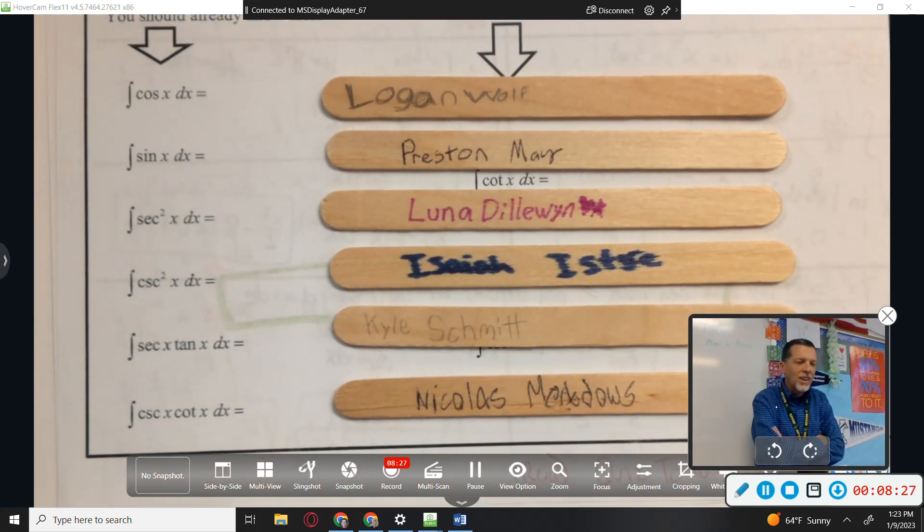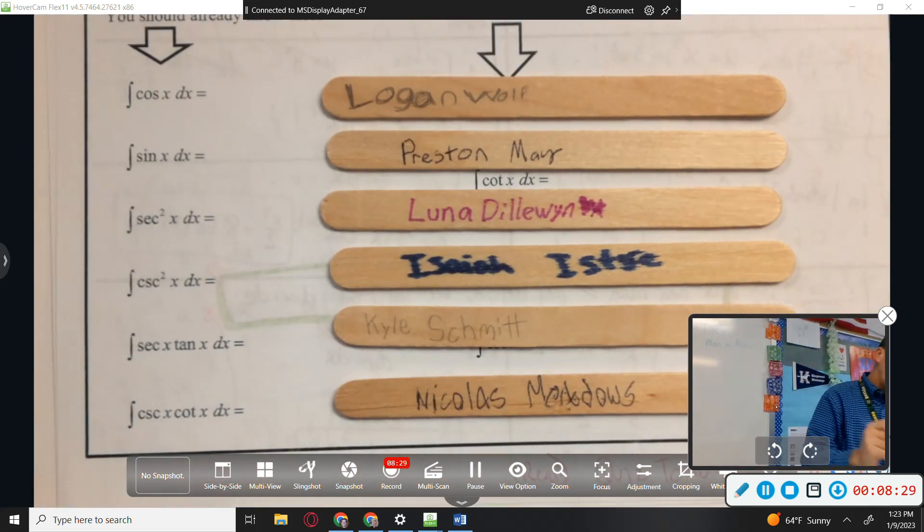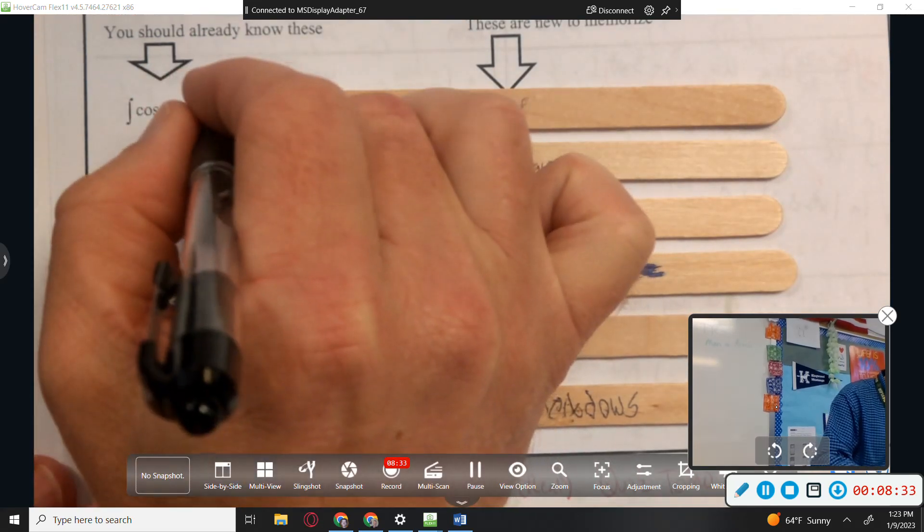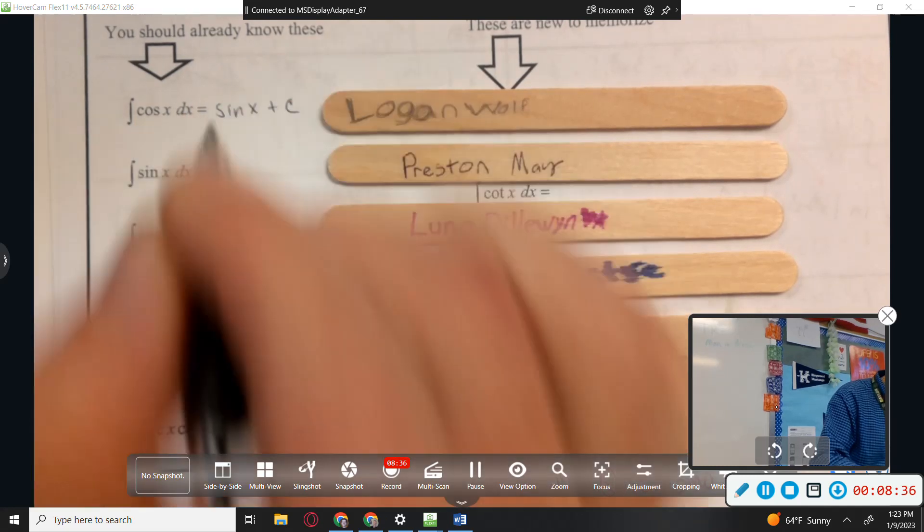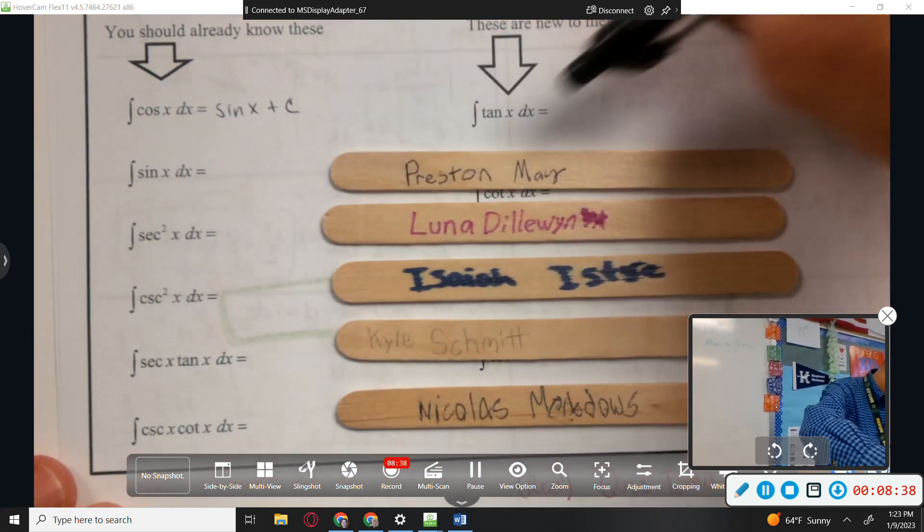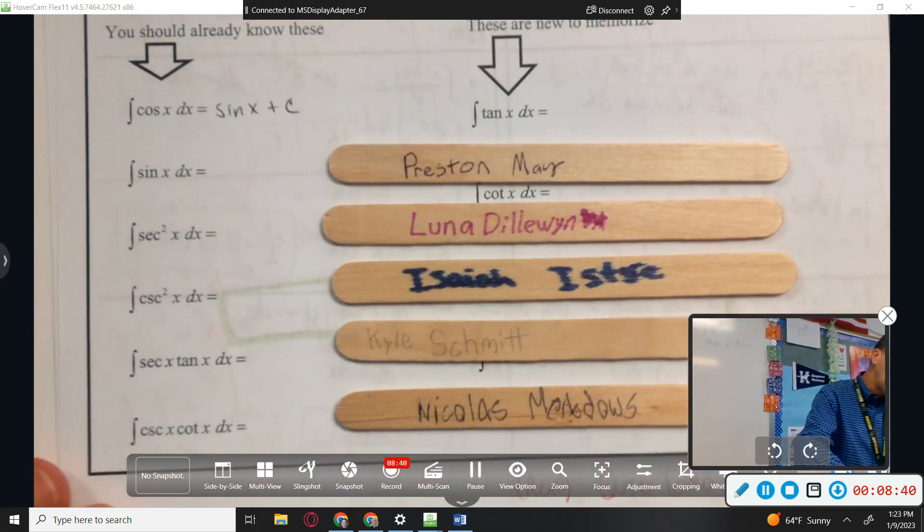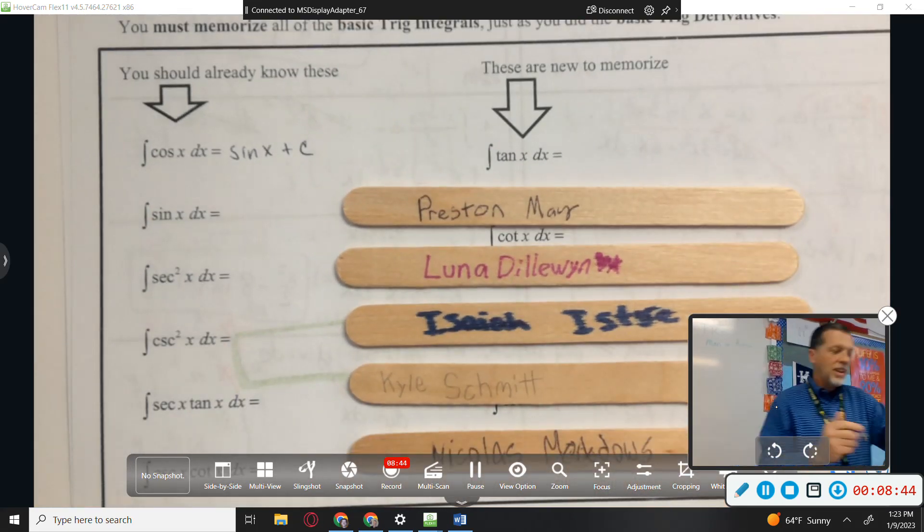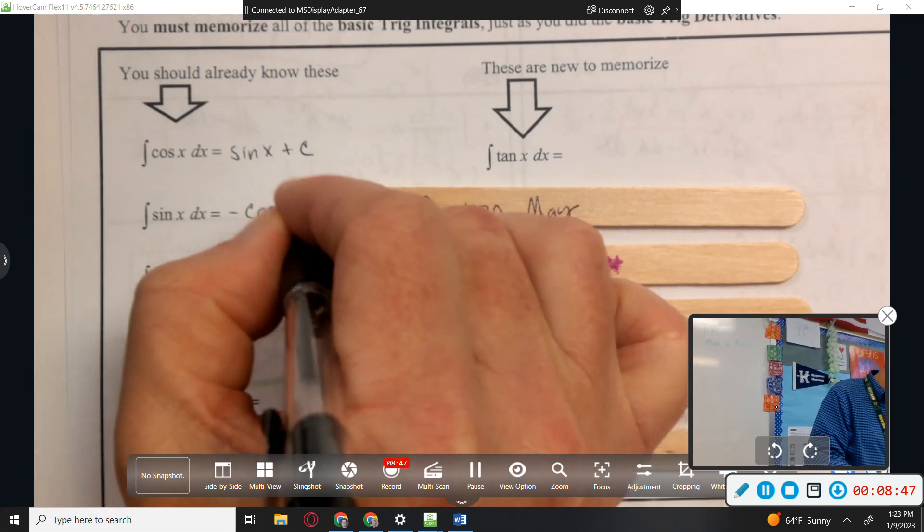Okay, but these folks are all here. And we've mentioned most of these already today. So, hopefully this isn't too bad. Logan, start us off. What's the antiderivative of cosine? Sine. Yes. Sine. Plus c. Good. Preston, how about the antiderivative of sine? Negative cosine of x plus c. Good.